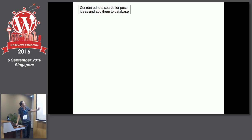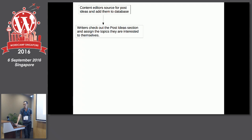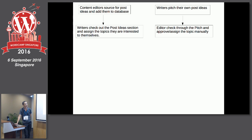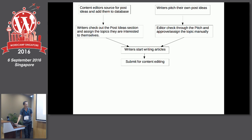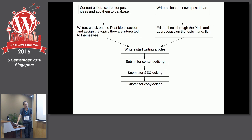Here's the flowchart. The content editor sources post ideas and adds them to the database. Writers check the post ideas section, and assign the topic they're interested in writing. Alternatively, they can pitch their own topic. The editor checks the topic and assigns it accordingly. The writer starts writing, and once finished, submits for content editing — the first round. Second round is SEO editing. Third round is copy editing. Lastly, we go live. That's our workflow.